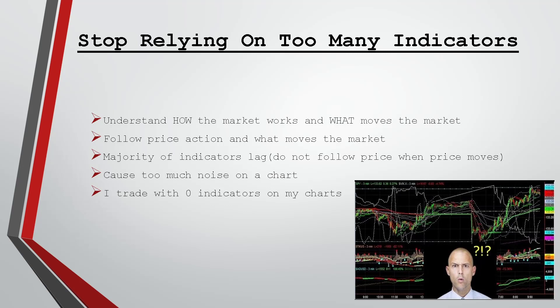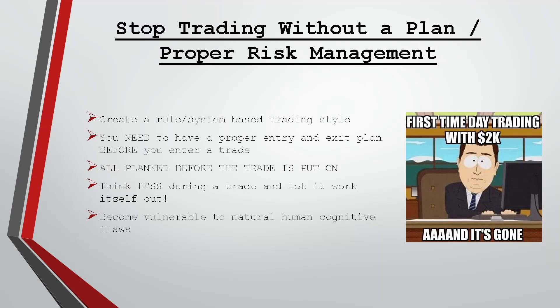I trade with zero indicators on my charts — I know how the market works and I have a simple strategy. The second reason is that traders do not trade with a plan and do not have proper risk management. You have to create a rules-based or system-based trading style. You need a proper entry and exit plan before you enter the trade, knowing exactly when to get in, how much to risk, and when to exit.